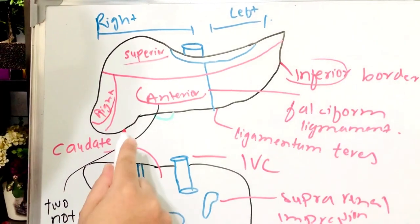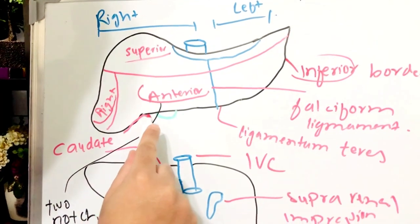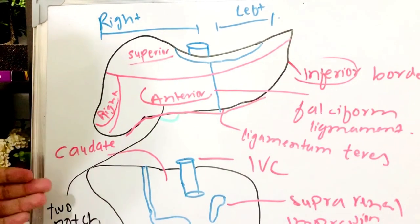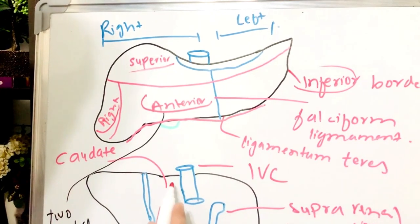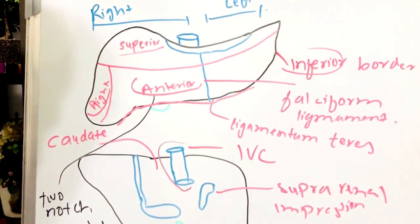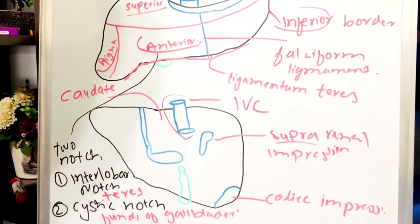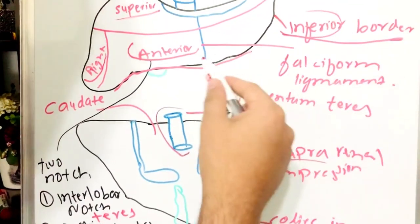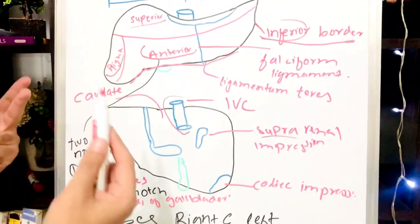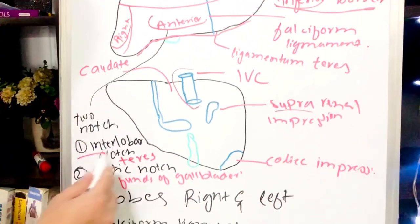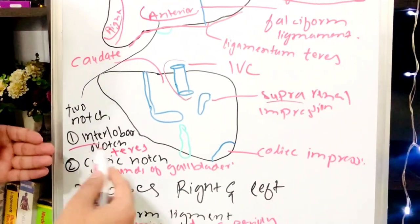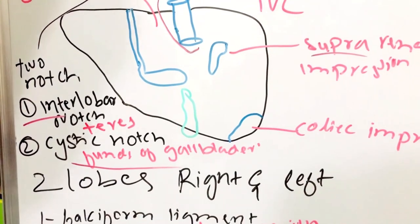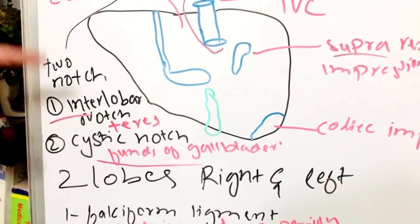We have only one prominent border in the liver, which is our inferior border. Looking posteriorly, we can see the inferior vena cava, suprarenal impressions, and porta hepatis. The inferior border and anterior border both have two notches: one is the interlobular notch, which is from the ligamentum teres, and the other is the cystic notch for the fundus of the gallbladder.